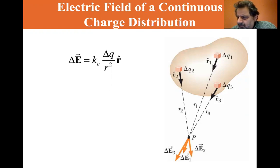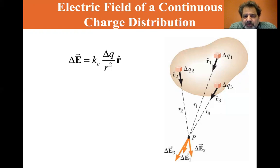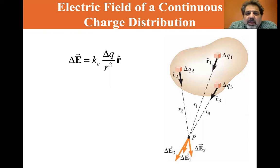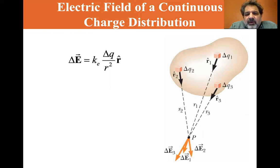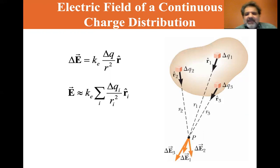Coulomb's Law: KE is equal to 8.99 times 10 to the ninth Newton meter squared per Coulomb squared. So for a single one of these, Delta E equals KE times Delta Q — Q1, Q2, whatever — divided by that particular radius R1, R2, or R3 squared, times the unit vector R1, 2, or 3 in the direction given. You sum all of these together and you get the total electric field.